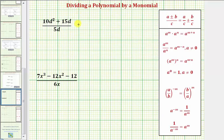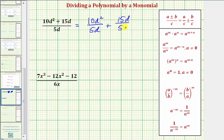In our first example, we have the quantity 10D squared plus 15D divided by 5D, which is equal to 10D squared divided by 5D plus 15D divided by 5D. So because we have two terms in the numerator, we now have two fractions to simplify.